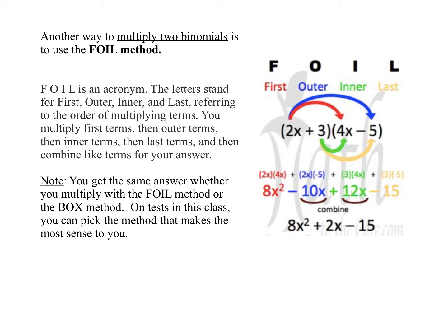The FOIL method is kind of like doing the distributive property two different times. On your first multiplication, you're just distributing the 2x times 4x, then 2x times negative 5, giving you the first two terms: 8x squared minus 10x. Then you distribute the 3: 3 times 4x makes 12x, and 3 times negative 5 makes negative 15. Then we combine like terms. Again, you don't have to use the FOIL method — if you prefer the box method, you can stick with it.